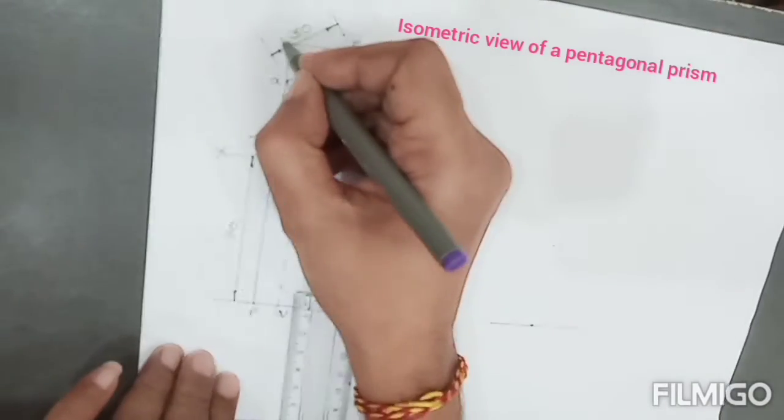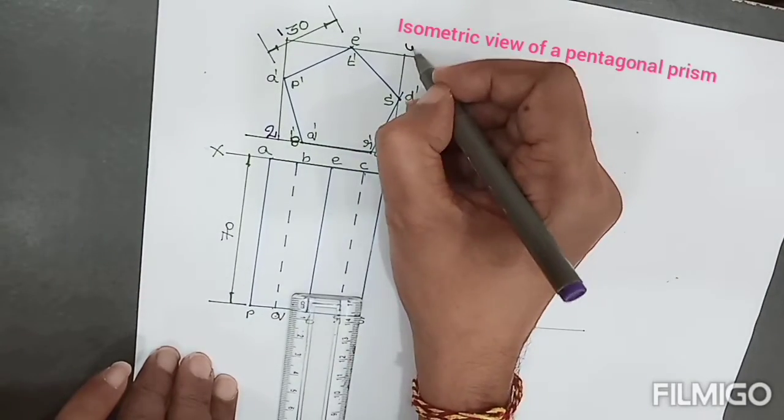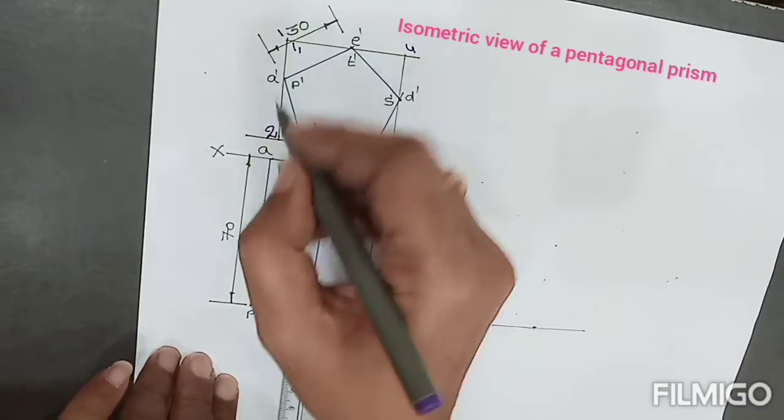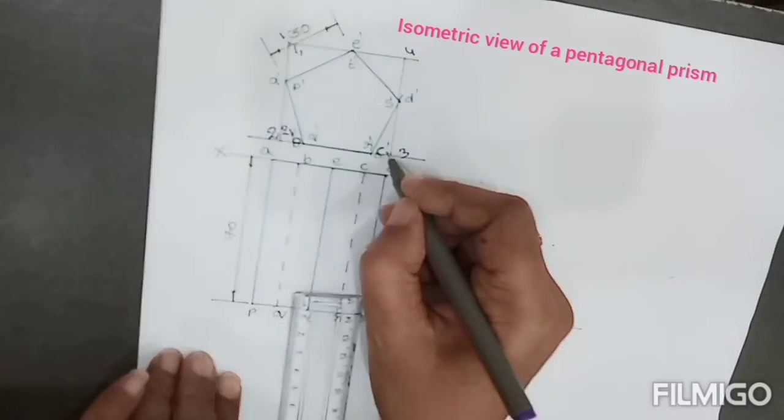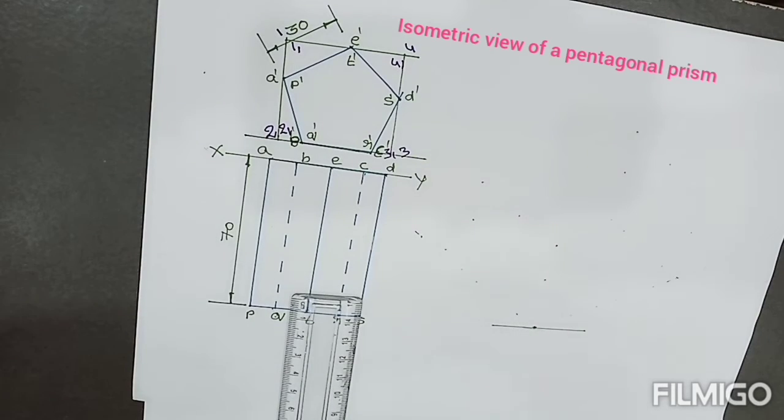Name this one as 1, 2, 3, 4 and 1 prime, 2 prime, 3 prime, 4 prime. That means two bases.